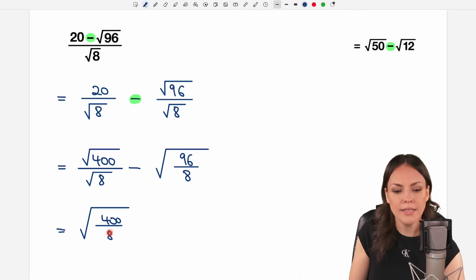400 over 8. And in my second square root, I have 96 over 8. I can calculate these things.